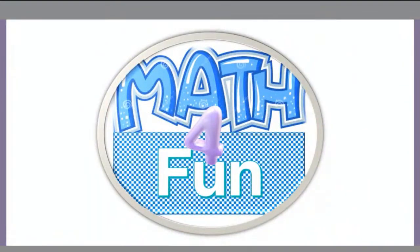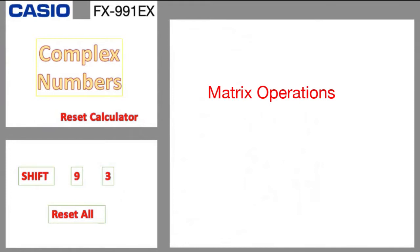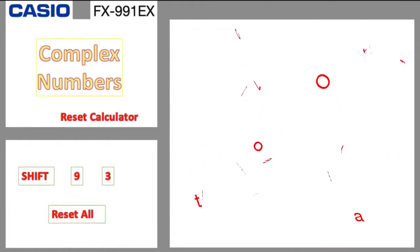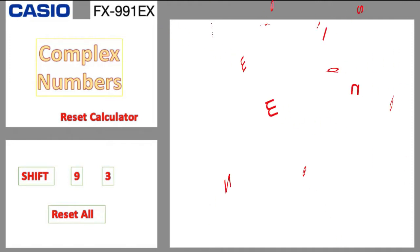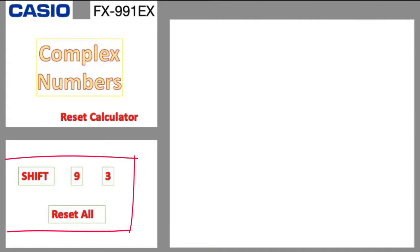Hello and welcome to Math for Fun. In the previous videos we explained matrix operations and vector operations. In this video we are going to continue with the FX991EX calculator and do complex numbers. First we need to reset the calculator as mentioned in the previous videos to start from scratch by pressing Shift 9 3 reset all.